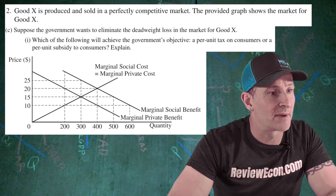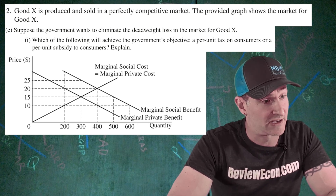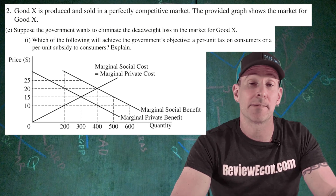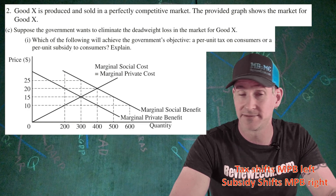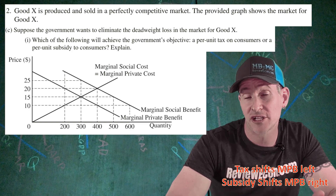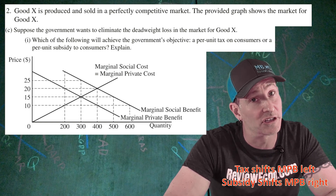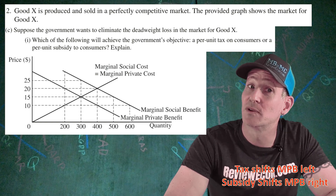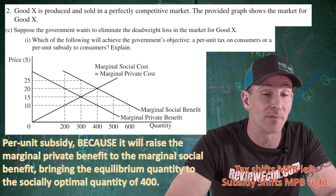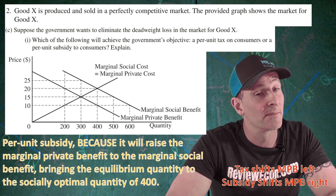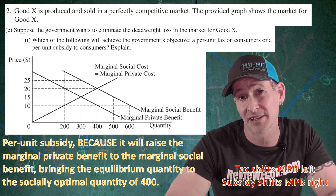For part C, we are told the government wants to eliminate the deadweight loss, and we are asked whether a per unit tax or a per unit subsidy to consumers will work. A per unit tax shifts the marginal private benefit to the left; a subsidy shifts it to the right. The allocatively efficient quantity is found at the intersection of marginal social benefit and marginal social cost — that's 400 units. We want to increase production, so the answer is a per unit subsidy, because it will raise the marginal private benefit to the marginal social benefit, bringing the equilibrium quantity to the socially optimal 400 units.